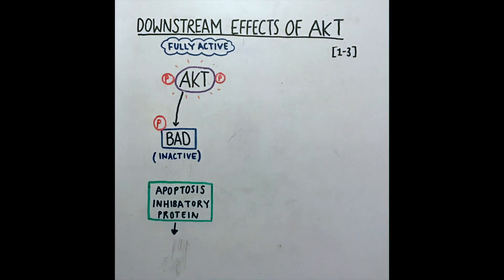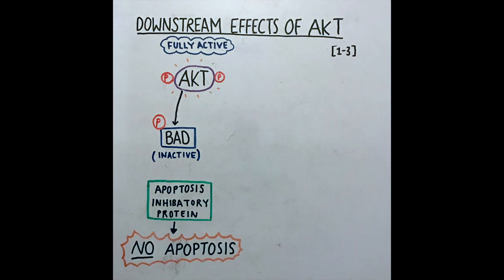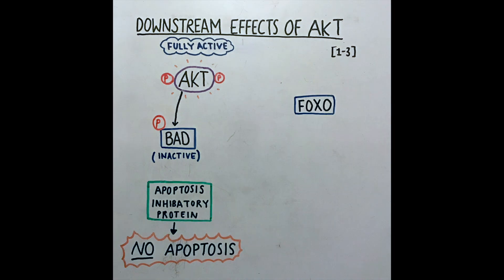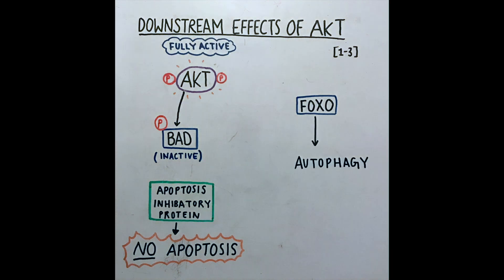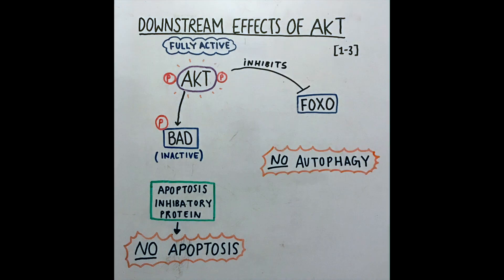The apoptosis inhibitory protein can then stop apoptosis. FOXO proteins are a group of transcription factors that lead to the autophagy of the cell. Active AKT can phosphorylate and inhibit FOXO, stopping autophagy.